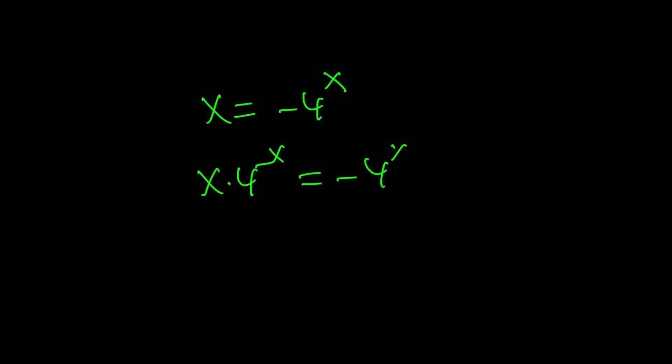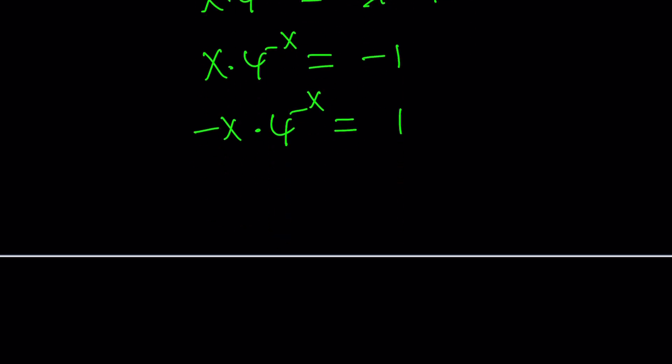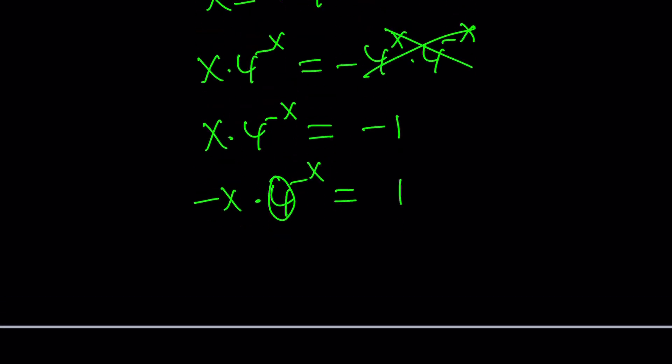We could go ahead and multiply both sides by 4 to the power of negative x. That would give us 1 here, because that would be 4 to the power of 0. And then we could multiply. Let me write down what we get from here first. They canceled out, leaving us with negative 1. And then we could multiply both sides by negative 1, and that would give us 1. And then finally, we could replace 4 with e to the power ln 4, and then multiply by negative x. And then finally, multiply both sides by ln 4.